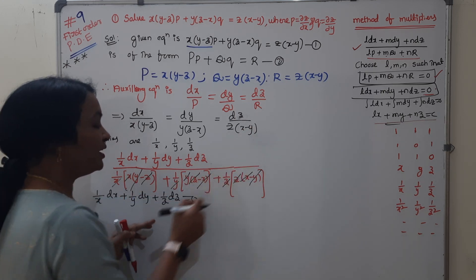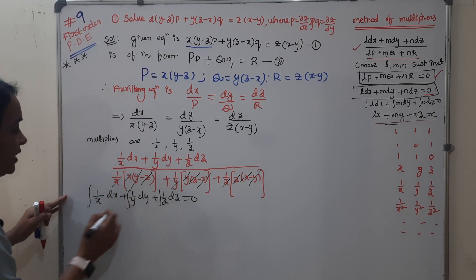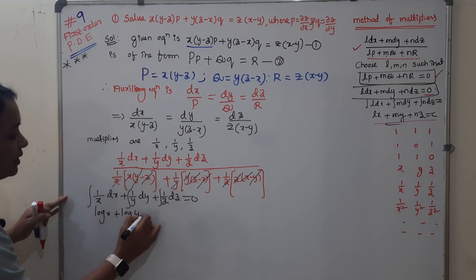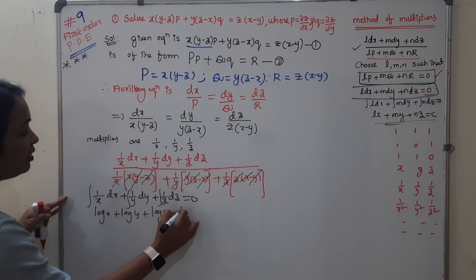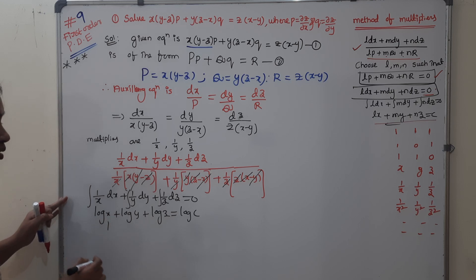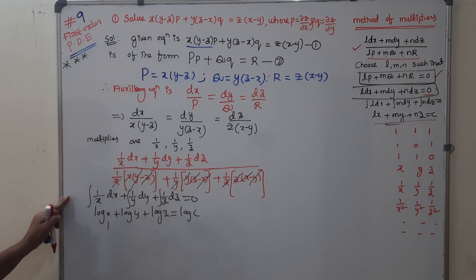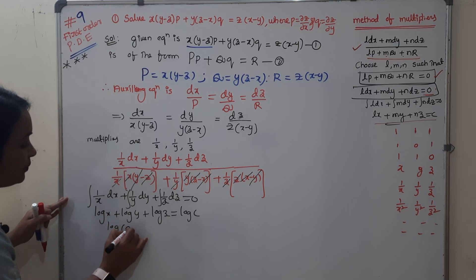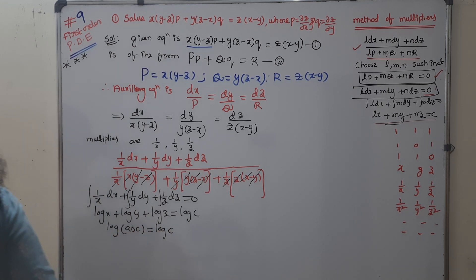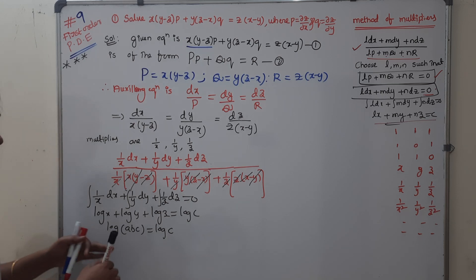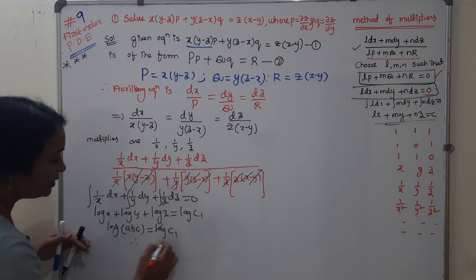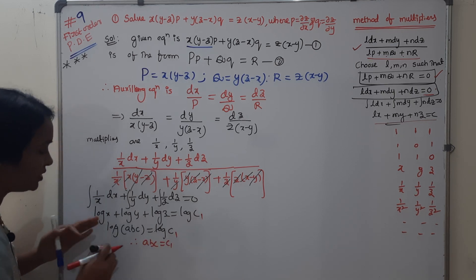Integrating (1/x)dx + (1/y)dy + (1/z)dz = 0 gives log x + log y + log z = log C. Using the log property log A + log B + log C = log(ABC), both sides log cancels, giving xyz = C1. This is the first solution.